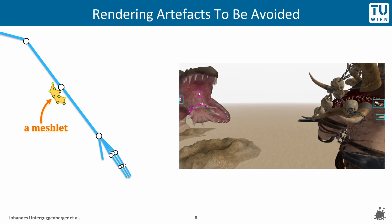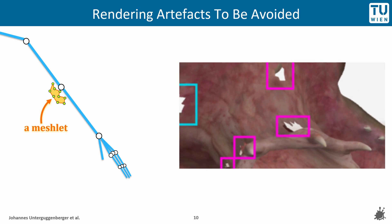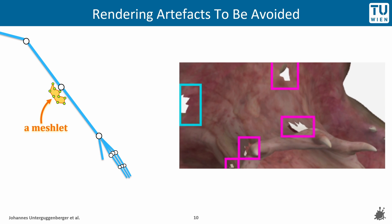However, when culling meshlets of animated models in particular, care must be taken, because rendering artifacts like those shown on the slide can occur easily. What we see at the borders of the screen are artifacts from premature view frustum culling. Meshlets that were distorted during animation were wrongfully deemed to be view frustum cullable, producing a false positive in terms of culling and leading to holes in the rendered result. The same type of artifact can be observed at the other side of the screen, and further artifacts marked in magenta are false positives from the backface culling algorithm.